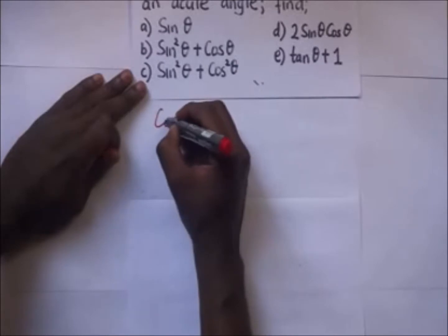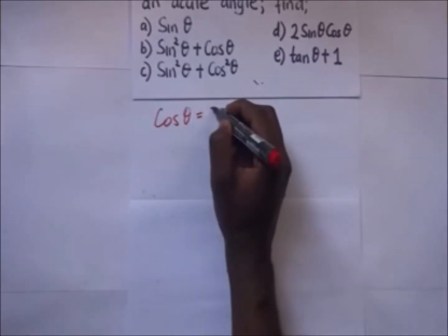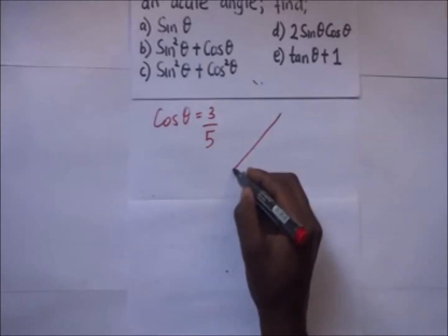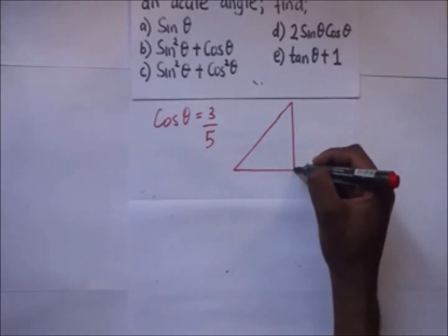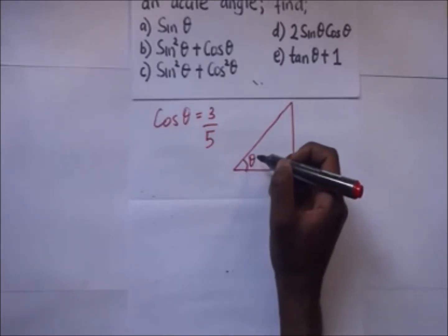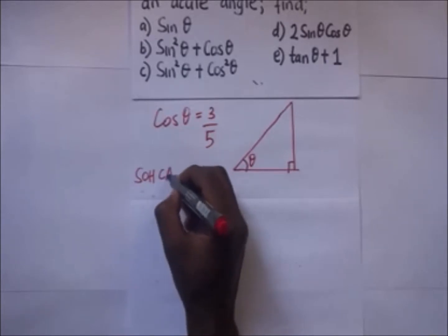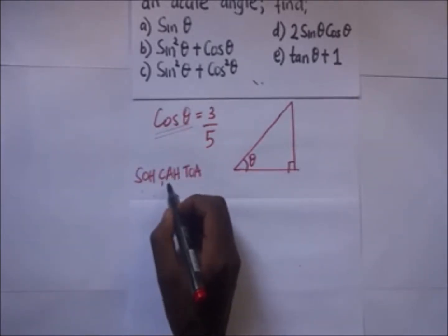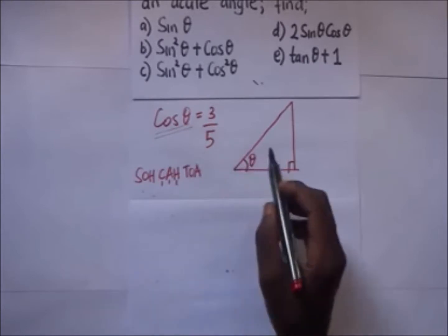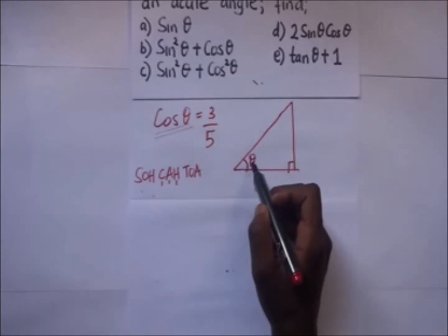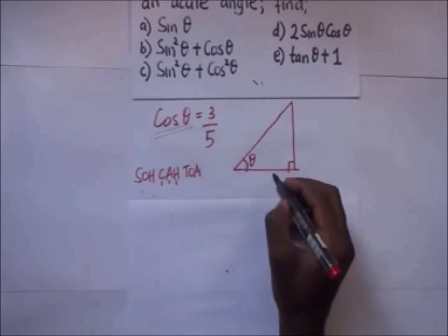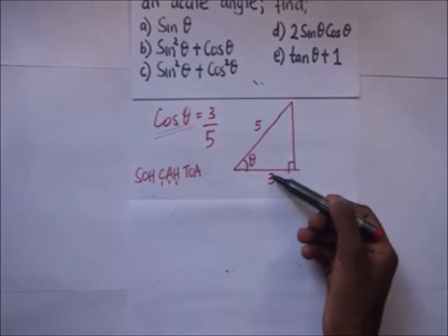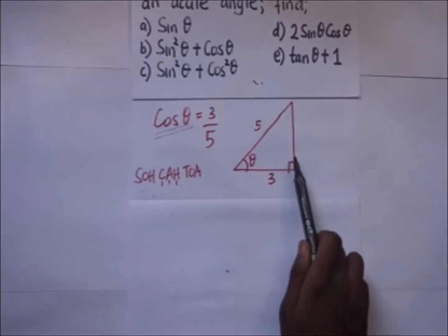We have cos theta equal to three over five. Since this is an acute angle, the right angle triangle will have theta labeled at one corner. Using SOH-CAH-TOA, cosine is equal to adjacent over hypotenuse. The adjacent side is three and the hypotenuse is five, so we can use the Pythagorean theorem to find the remaining side.